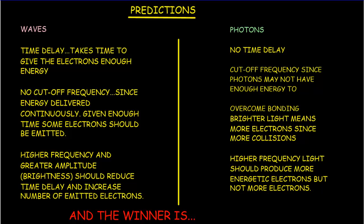Let's take a deeper look at the different predictions made by the photon model versus the wave model. The first critical difference is no time delay versus a time delay. In the wave model, there's a gradual transference as the oscillating electric fields shake the electrons and eventually give them enough energy to be fired out of the metal. Whereas photons come in and give up all their energy to a single electron — if enough energy has been given, emission will be instantaneous.